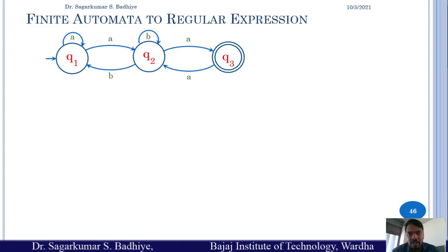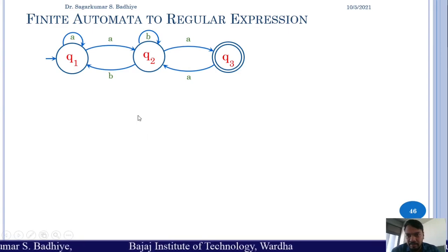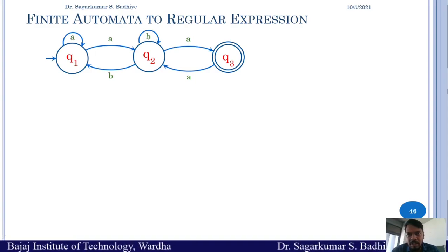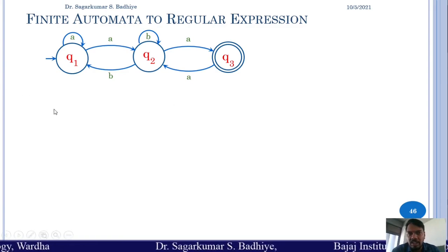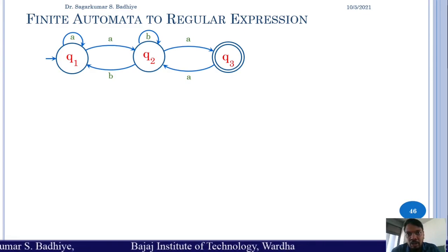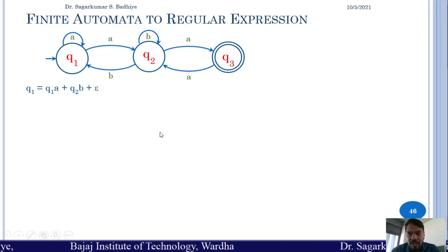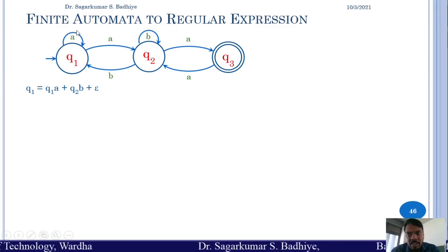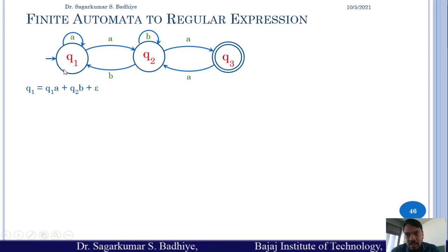Suppose a finite automata is given — we need to form equations from it and then apply Arden's theorem on those equations. Equations will be formed for all the states, written based on the transitions coming towards those states. For state q1, which is the initial state, epsilon must be included.